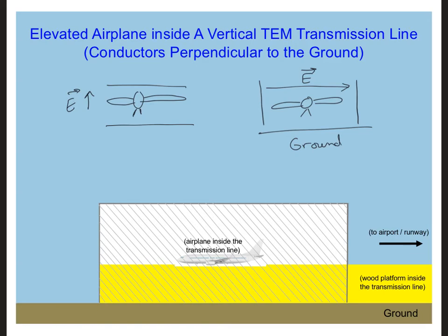Take out your in-class project notebook and make a note about the best orientation of the airplane relative to the orientation of the electric field of the plane wave in the transmission line. Include a diagram of the new setup — an image of a handwritten diagram is fine.